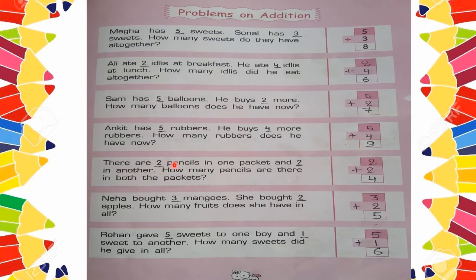Next: there are 2 pencils in one pocket and 2 pencils in another. How many pencils are there in both pockets? Write 2 for the first pocket and 2 for the second. 2 plus 2: counting 3, 4. So 2 plus 2 is equal to 4.